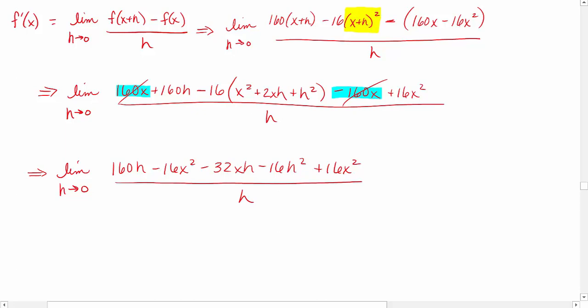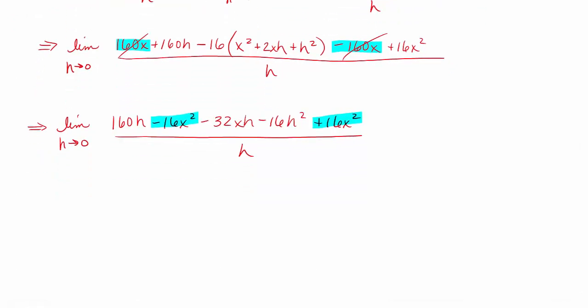We have some more like terms that can be combined. Minus 16x² and 16x² fall out for us. That gives us the limit as h approaches 0 of 160h - 32xh - 16h², all over h.